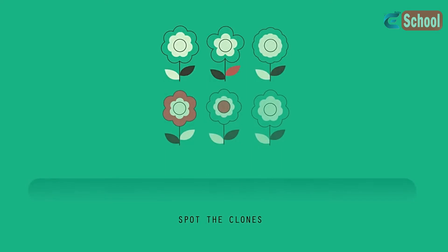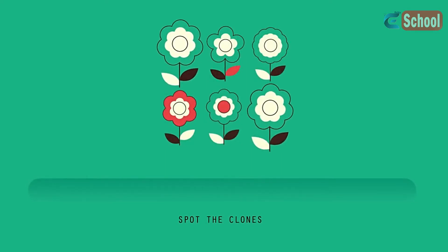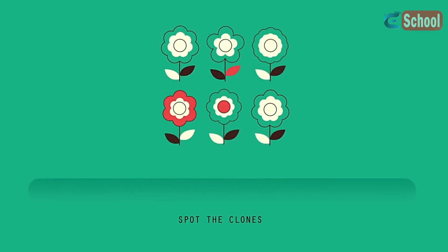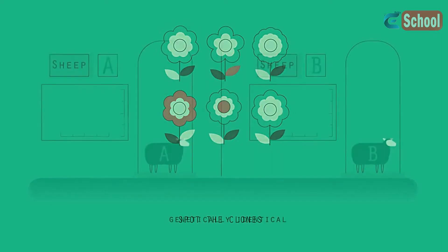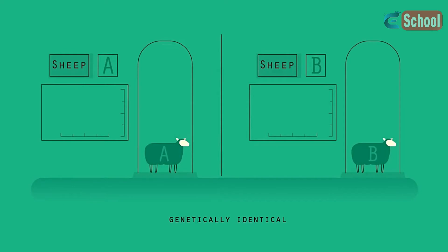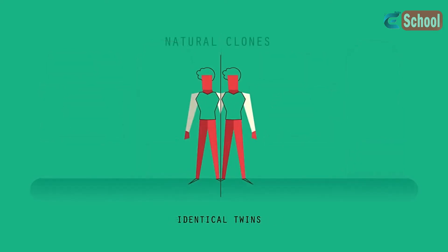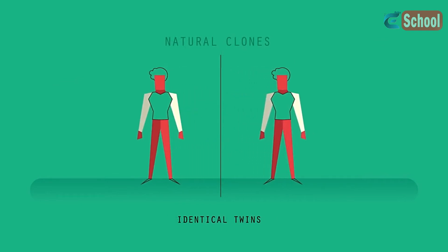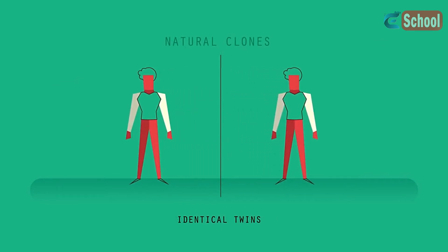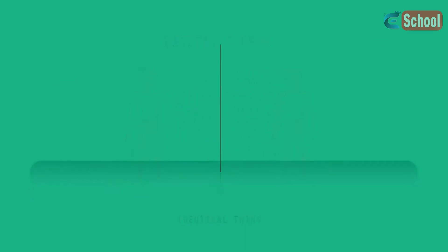Can you spot the two clones? When we talk about clones in science, we mean organisms that are identical copies. They have the same DNA as each other. Identical twins are examples of naturally occurring clones.